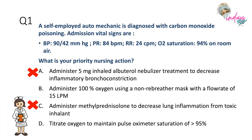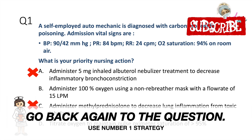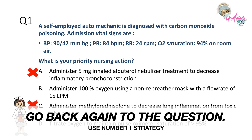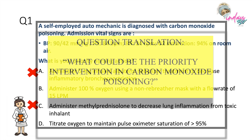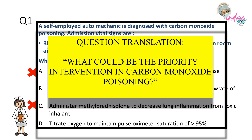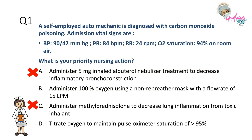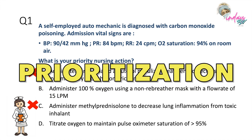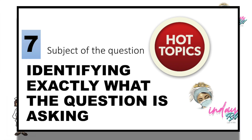Now we are left with two opposite options: letter B and letter D. Our next strategy is to go back to the question since we are left with two opposite choices. The question is: what is your priority nursing action in a patient with carbon monoxide poisoning? Despite all the details like the patient's vital signs, we need to focus on prioritization and the topic of carbon monoxide.